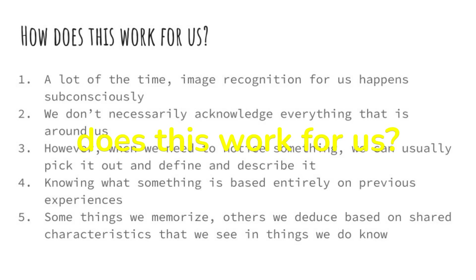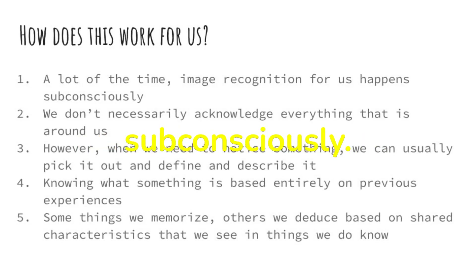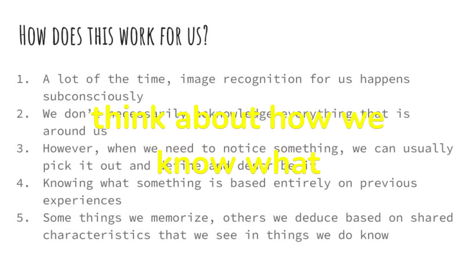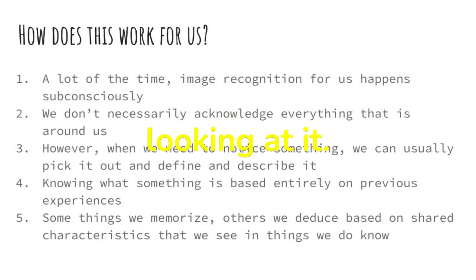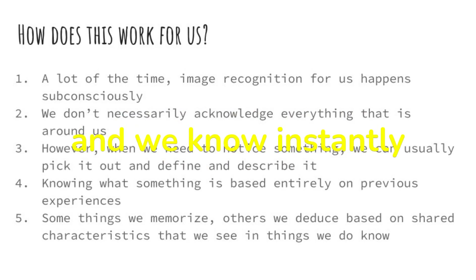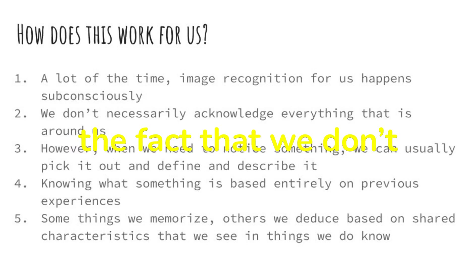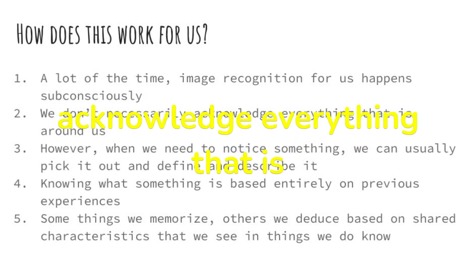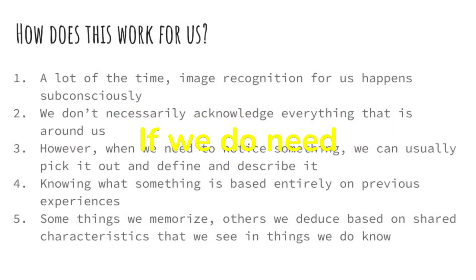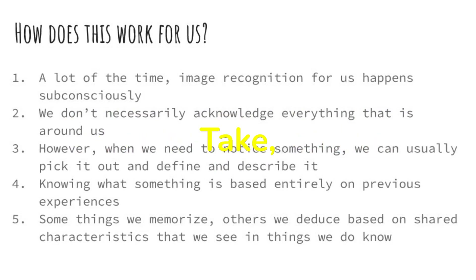How does this work for us? A lot of the time, image recognition happens subconsciously. We rarely think about how we know what something is just by looking at it — we just take a look at it and know instantly kind of what it is. A big part of this is the fact that we don't necessarily acknowledge everything around us. If we do need to notice something, then we can usually pick it out and define and describe it.